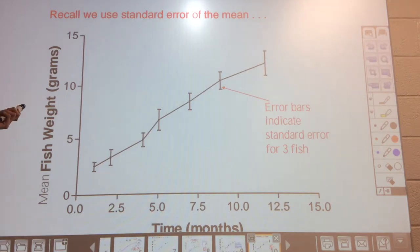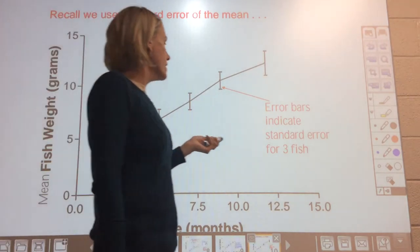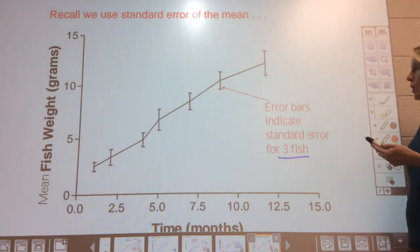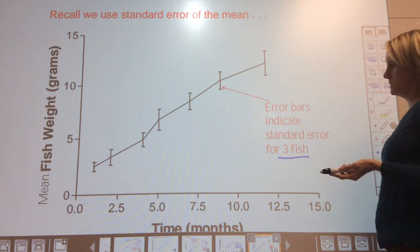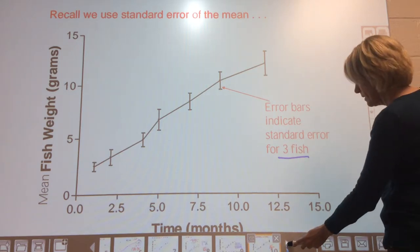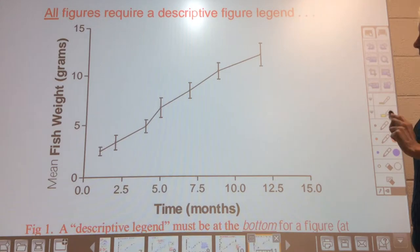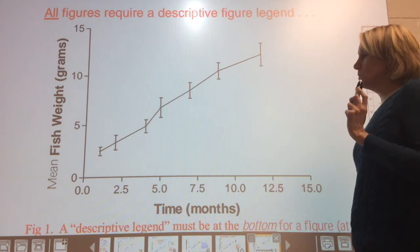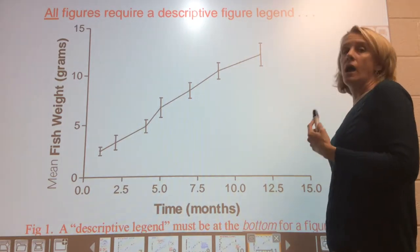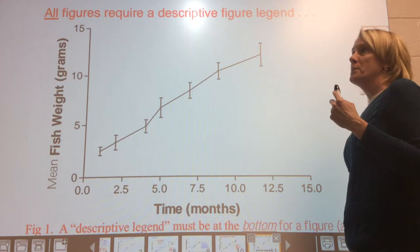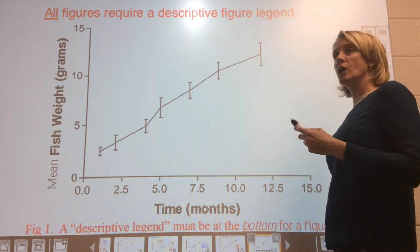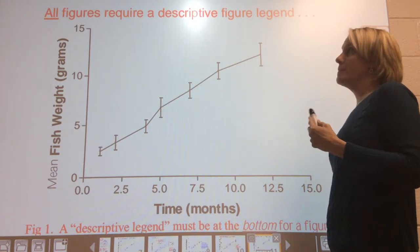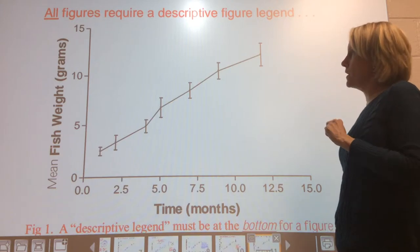Now we have error bars indicating standard error, and it's also a good idea to tell the reader how many replicates there were — for instance, standard error for three fish. Descriptive figure legends are often the most difficult things for students to write and take some practice. I suggest paying more attention to figures in scientific papers you read — notice how they're worded and what information they contain.